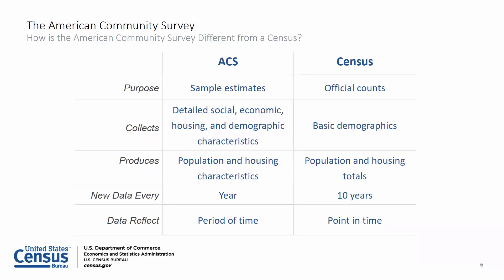The ACS produces population and housing characteristics, whereas the Census produces population and housing totals. The ACS occurs annually, reflecting a period of time over which the data are collected, averaging data for 12 months or 60 months. Whereas the Census occurs every 10 years and reflects a point in time.